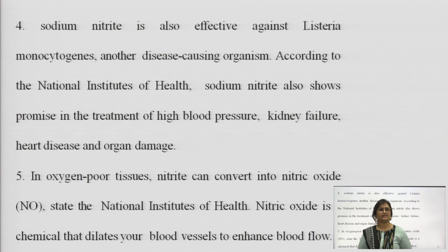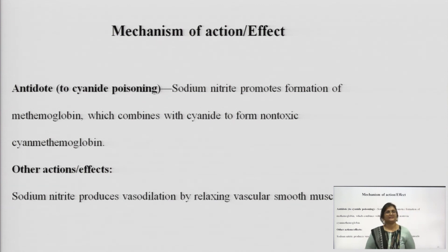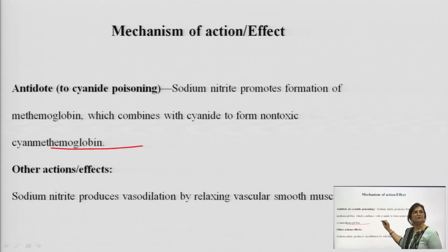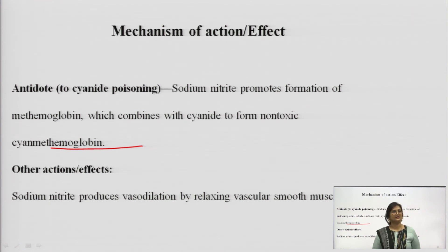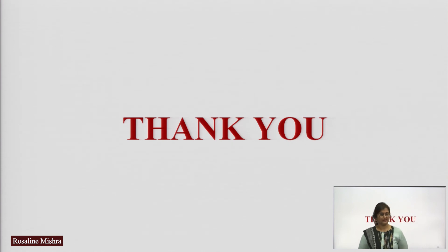In oxygen-poor tissues, nitrite can convert into nitric oxide — a chemical that dilates blood vessels to enhance blood flow. Sodium nitrite acts as an antidote by promoting formation of methemoglobin, which combines with cyanide to form non-toxic cyanomethemoglobin. Other actions include vasodilation by relaxing vascular smooth muscles. With this, we come to the end of our class. I hope this was helpful to all of you. Thank you.